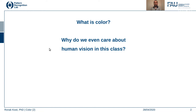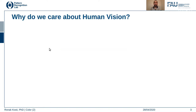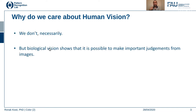So what is color, and do we really care about it? Do we really care about how human vision responds to colors? Computer vision is basically about mimicking human vision, and cameras are designed to mimic the human eye. We care because biological vision shows that it is possible to make important judgments about images using colors — we can interpret interesting aspects of objects.